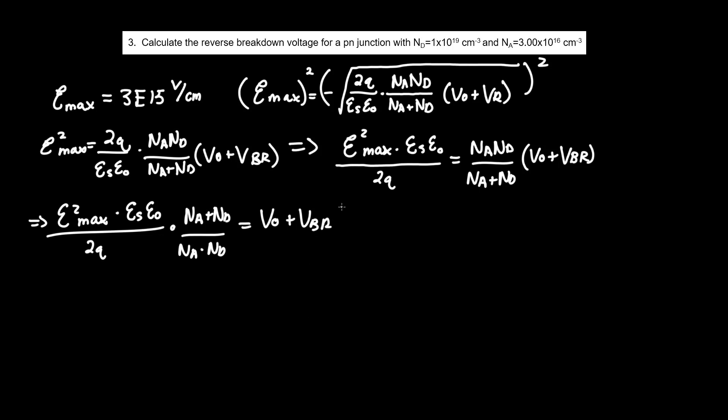Last thing we have to do, the easiest, is move V0 to the other side. So flipping it around, VBR equals the entire term, epsilon max squared times epsilon S epsilon naught over 2Q times NA plus ND over NA times ND, all minus V0.